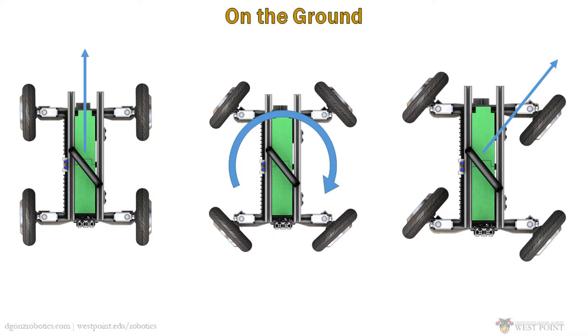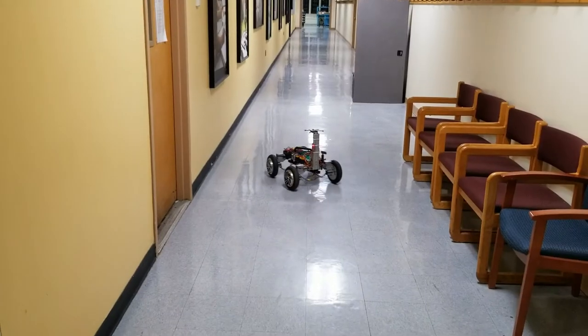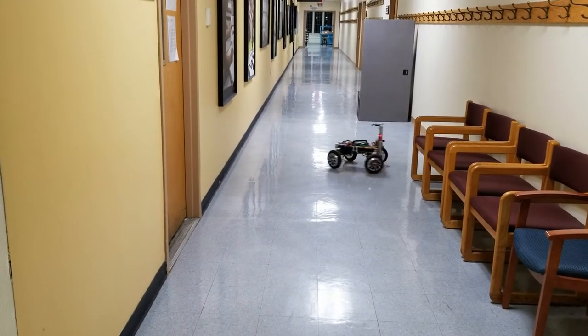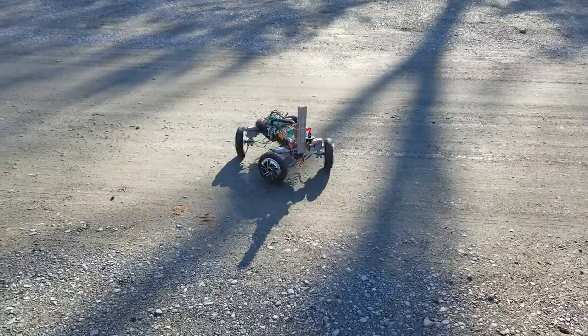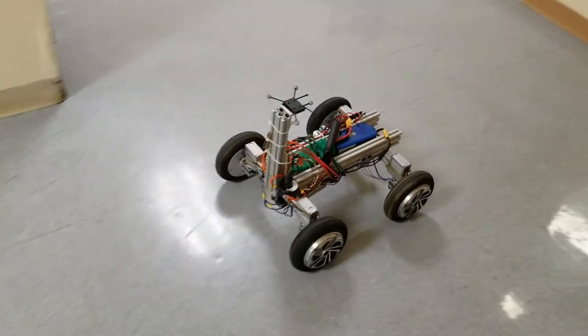While on the ground, this architecture allows Agro to move forward and back like a conventional ground robot, but it also allows Agro to achieve a tighter turning radius, turn on a dime with zero turning radius, and strafe sideways.